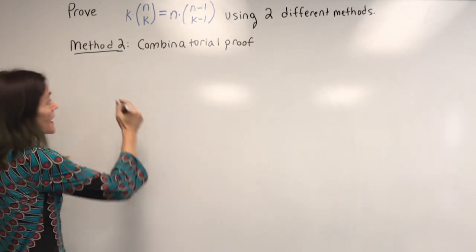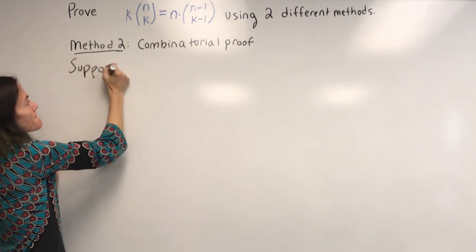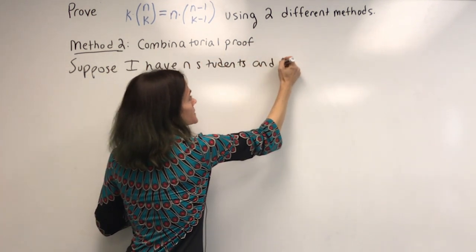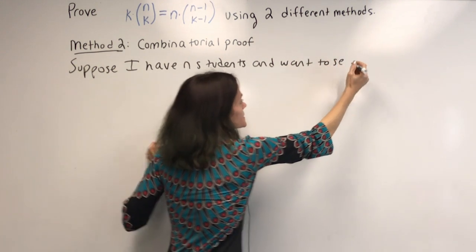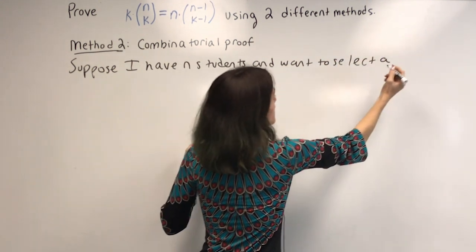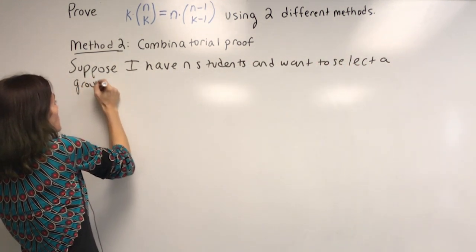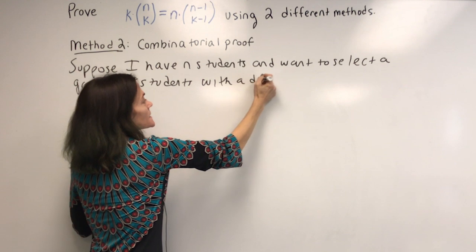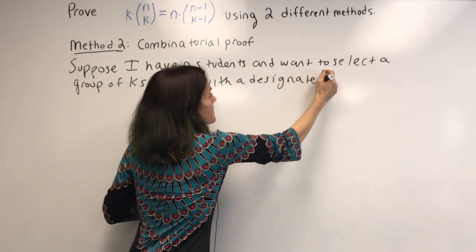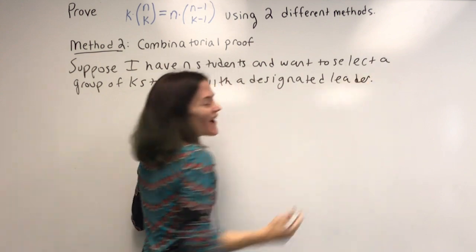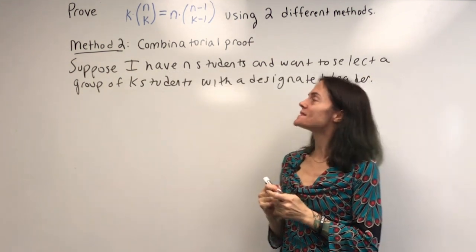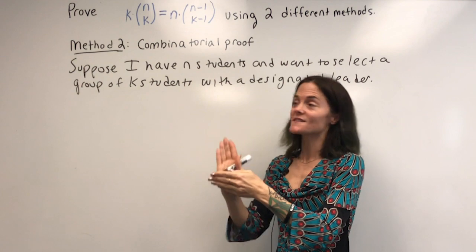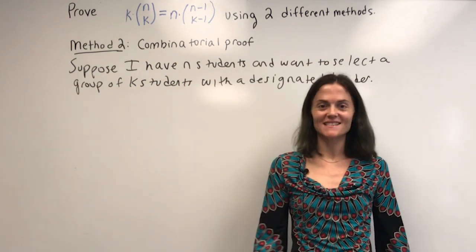So here is my story for what they're going to count. Suppose I have n students, and I want to select a group of k students with a designated leader — perhaps I'm trying to have a group of k that works on a particular problem, and one of those k is my designated leader that will stand up and present to the class.